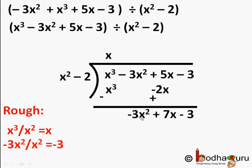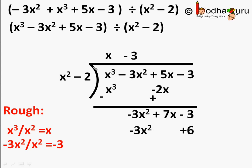So minus 3x squared divided by x squared gives minus 3. We write it as the next quotient term above the line. Then we multiply the divisor x squared minus 2 by the quotient minus 3, getting minus 3x squared plus 6. We write it below the remaining dividend, matching its degree with each of the terms, giving minus 3x squared plus 6 below. We subtract: minus 3x squared plus 3x squared becomes 0.